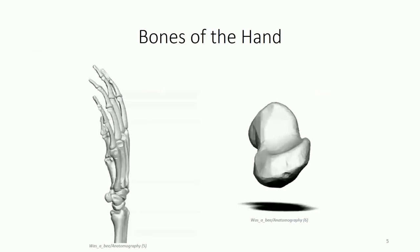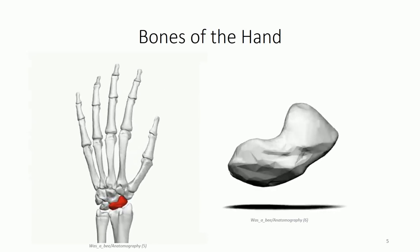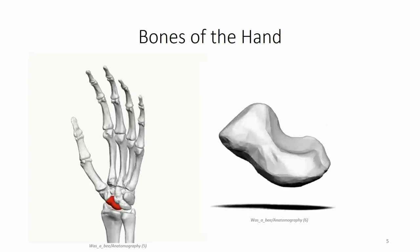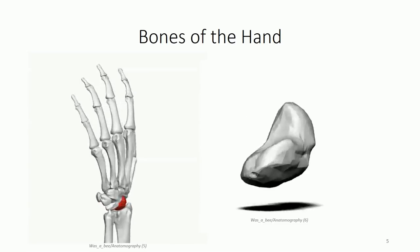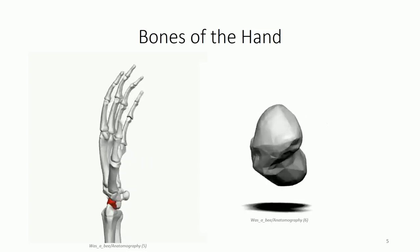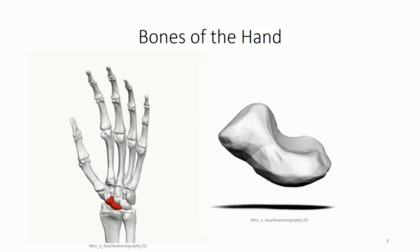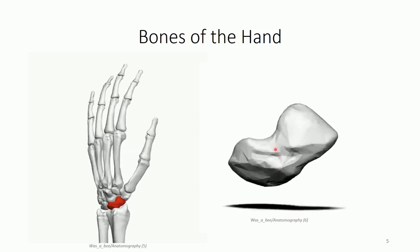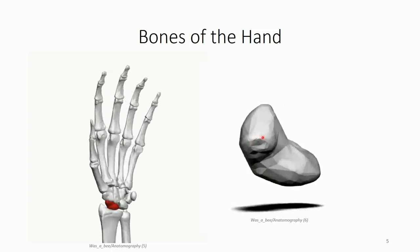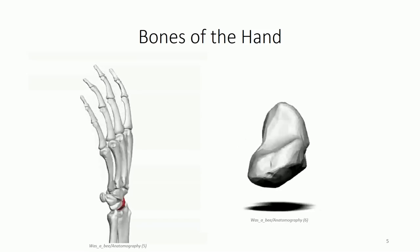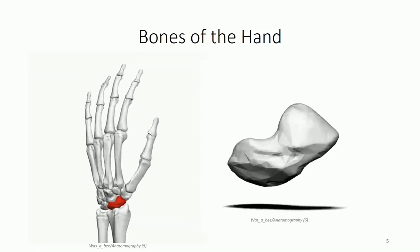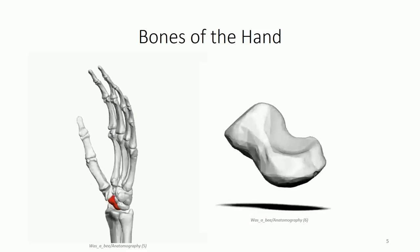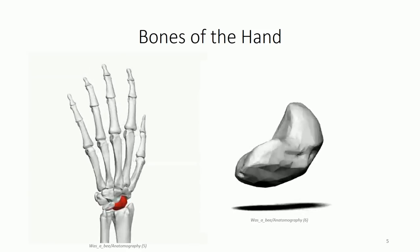Starting with the proximal row, we have the scaphoid on the most lateral side. It gets its name for its boat-shaped appearance, having a concave distal surface and concave proximal surface. The bone is separated into proximal and distal portions by a neck region, and a prominent tubercle is often observed in the palmar surface for attachment of the transverse carpal ligament. The smooth proximal surface articulates extensively with the distal surface of the radius, and the convex surface articulates with four of the other carpal bones.